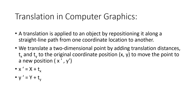We'll learn about translation today. A translation is applied to an object by repositioning it along a straight line path from one coordinate location to another — that is, you are just changing the position of an object from one place to another. We translate 2D objects by adding translation distances tx and ty to the original coordinate position (x, y) and move it to the new position (x dash, y dash). So x dash equals x plus tx, and y dash equals y plus ty.